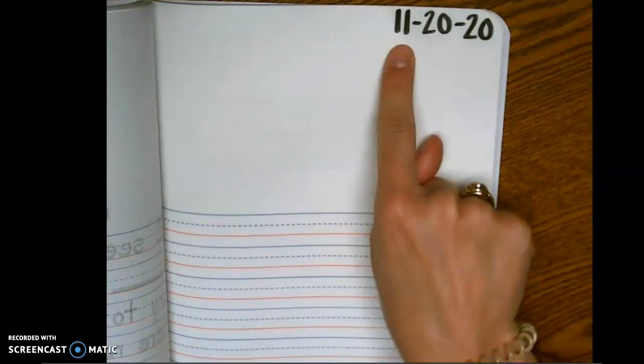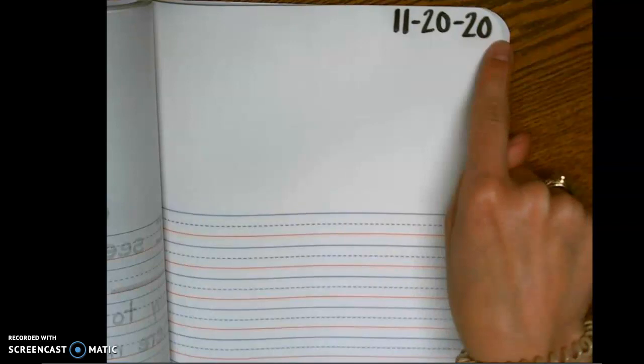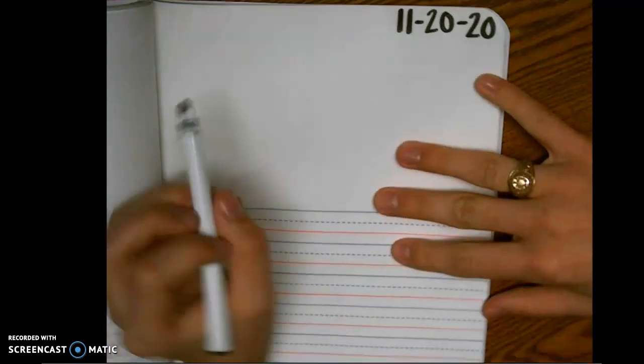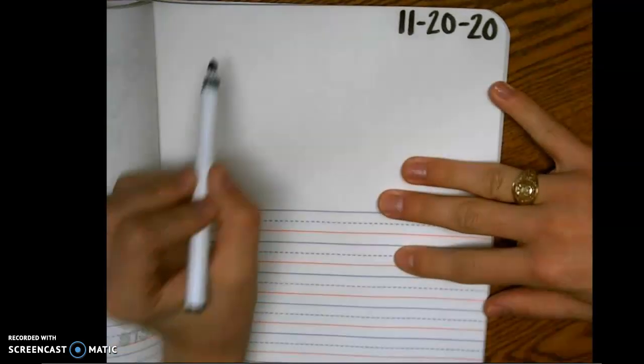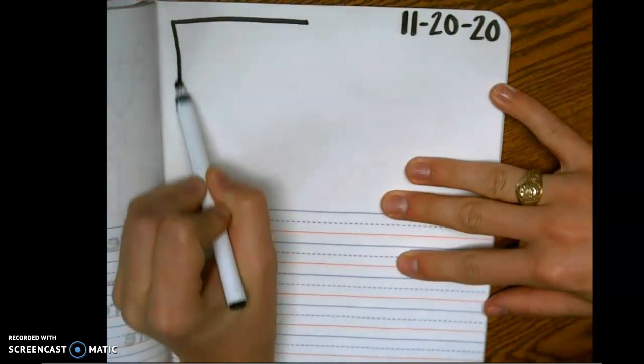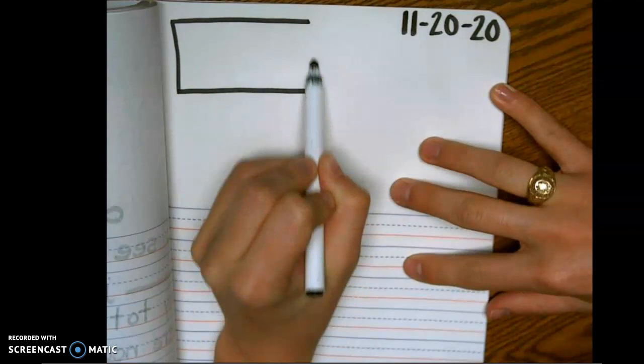For Fact Fluency Friday we are going to draw a part-part-whole map or a strip diagram. So what I want you to do is up here draw a rectangle like this.